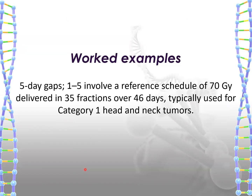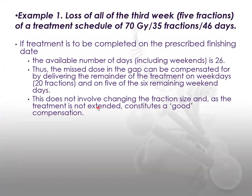We're going to work on an example. A 70 Gy dose should be delivered in 35 fractions over 46 days. For example, if the patient loses the third week, five fractions are missed. The treatment can be compensated by treating patients on Saturdays — the later scheme incorporates six days a week.